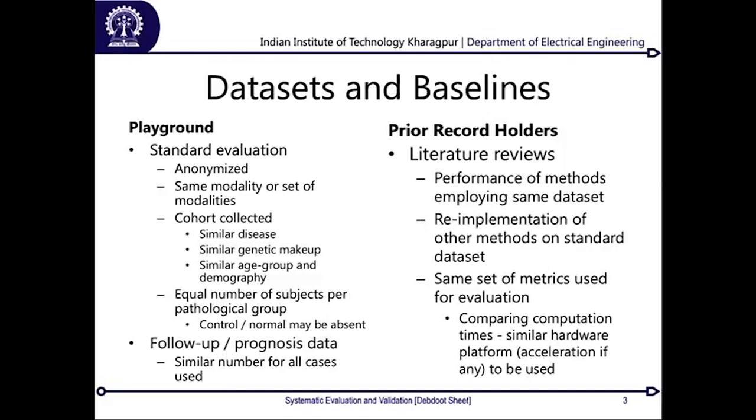The next requirement is to choose the same set of modalities or the same modality. If you are trying to segment the left ventricle of the heart, you cannot mix 5 ultrasound images, 7 MR T1 images, 3 MR T2 images, and 8 CT angiography images. You need to focus on one modality, or if doing a multimodal procedure, all patients - we call them subjects since they may be healthy individuals - should have all the same modalities. You cannot compare apples and oranges - you cannot compare segmentation performance on ultrasound with performance on CT.